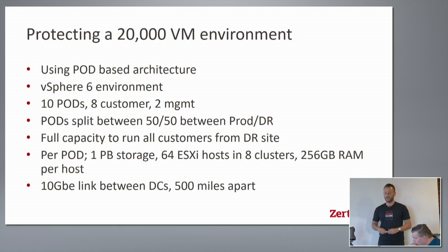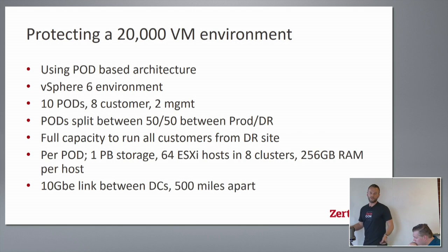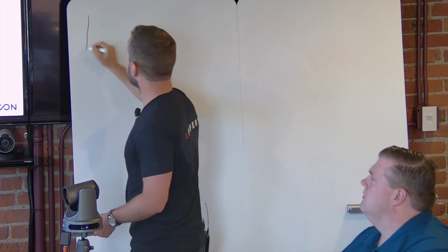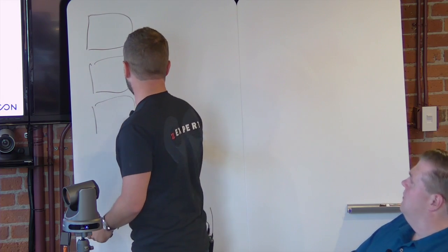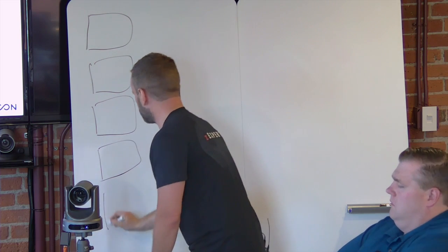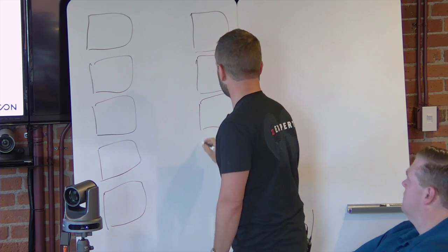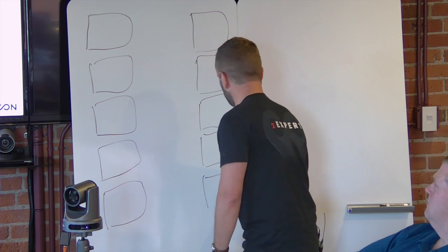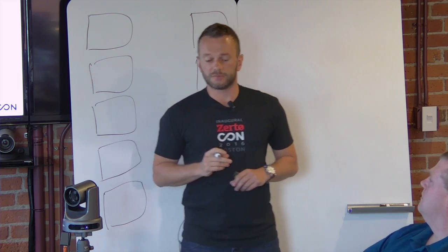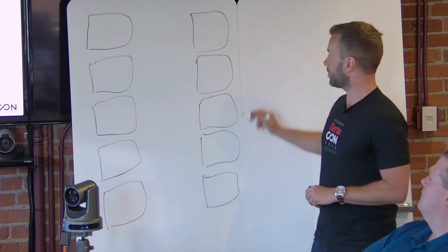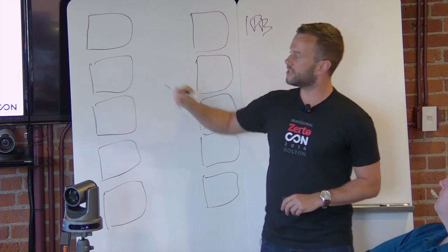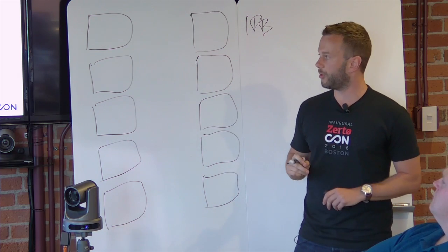They have 10 pods: eight for the customer VMs and two for management, as per design best practices. These are split 50-50 between production and DR, because if you're a SaaS provider you can't run in a degraded state in the DR site — it's just as good as down if every customer is fighting for the same resource. The architecture has four customer pods and one management pod on each side.